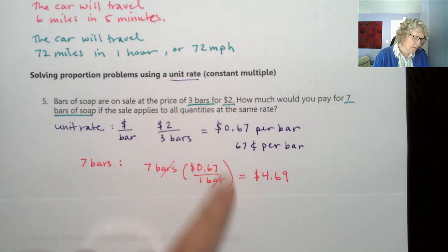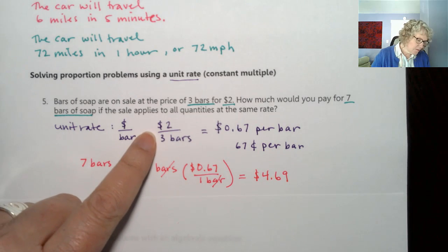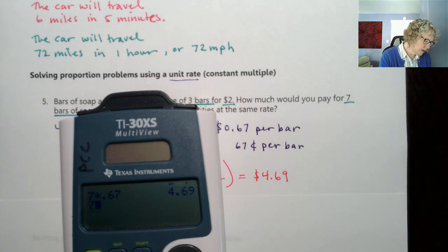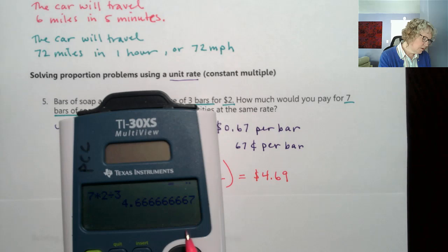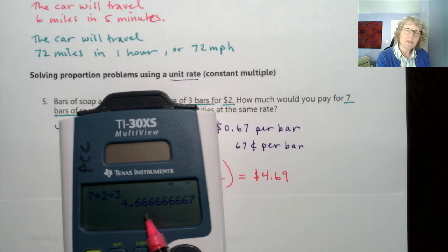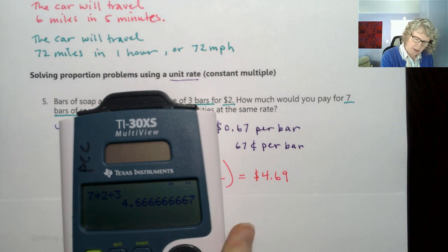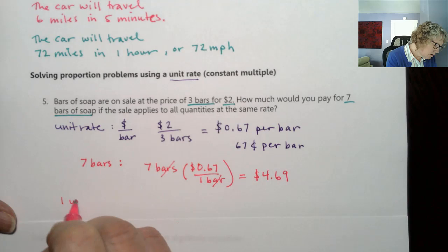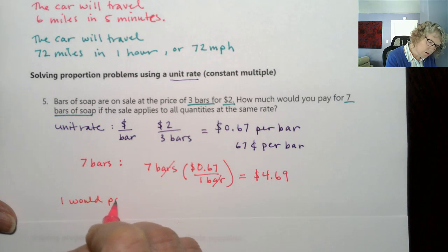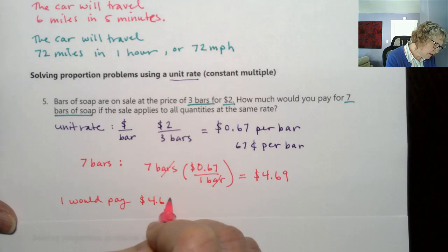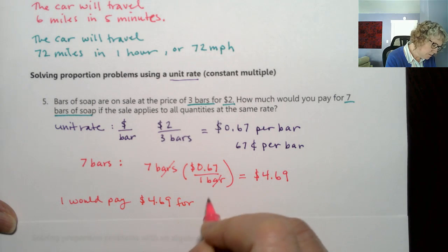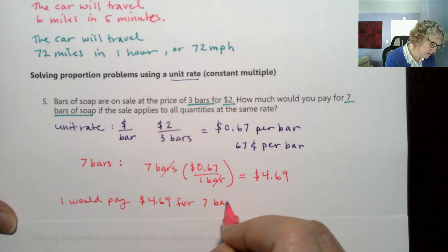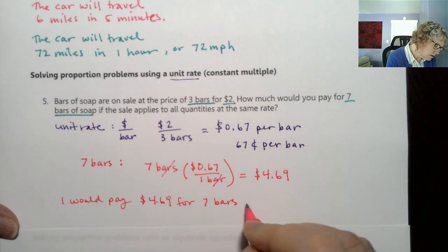Now we rounded this, so if I did 7 times 2 thirds, it might get a slightly different answer. Actually we wouldn't have this round off error, so we would get 4.67. Either one is okay, that's why you show your steps. Either one is really correct. So I would pay $4.69 or $4.67 depending on how the store calculates it, for 7 bars of soap.